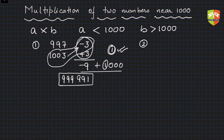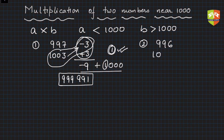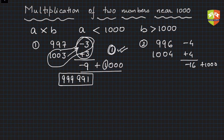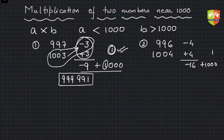Let's take another example. I will now take 996 and 1004. Clearly this is minus 4 and this is plus 4 — the deviations from thousand. The product is minus 16. Add thousand, write a 1 here — just write 1 so you can accommodate it later. Minus 16 plus thousand is nothing but 884.